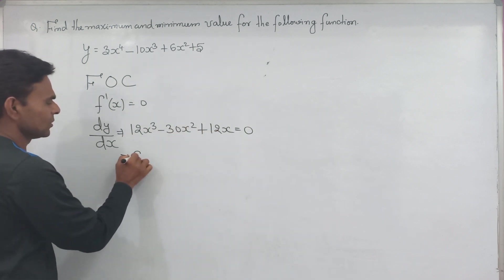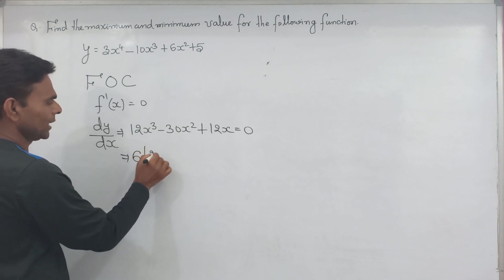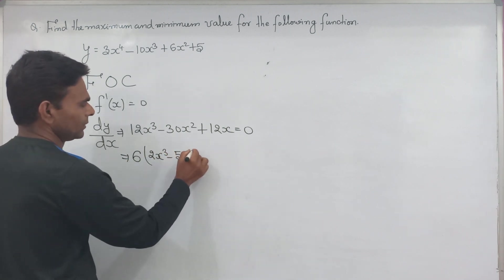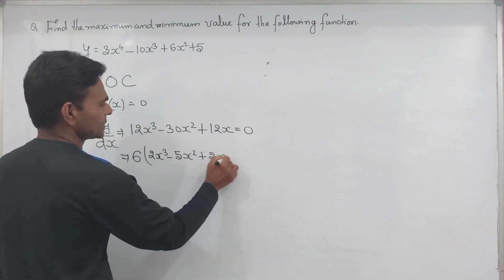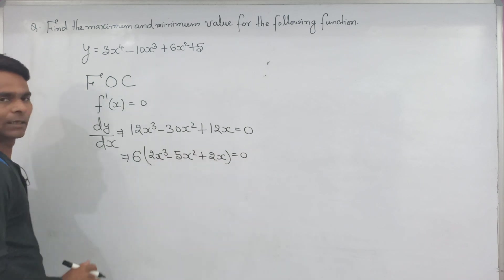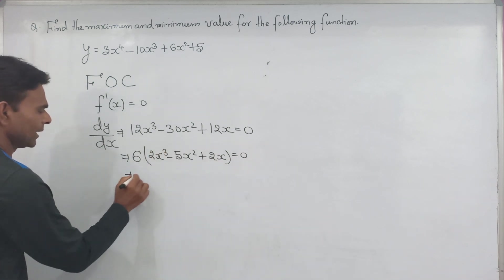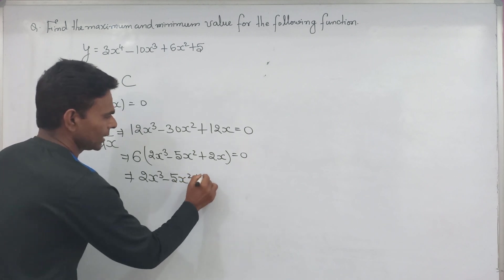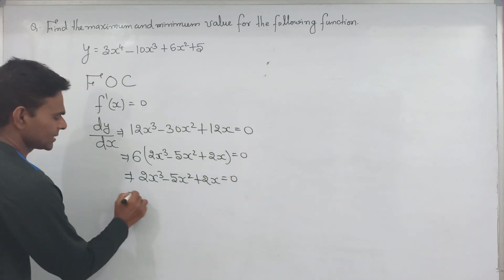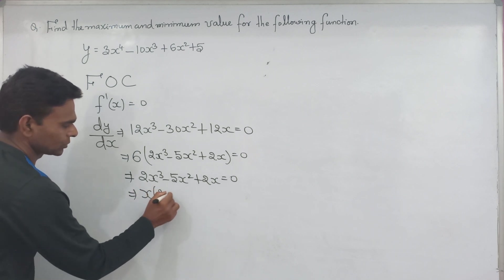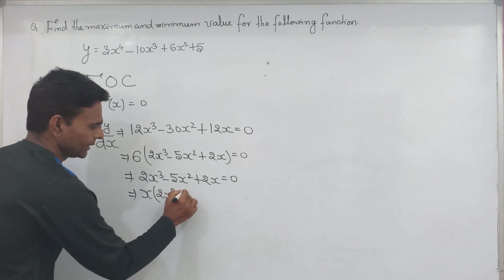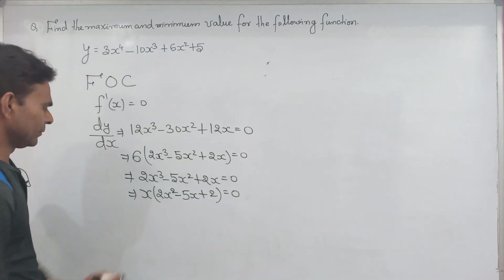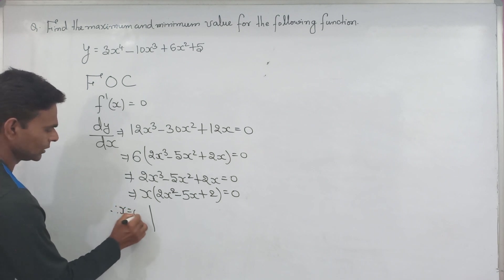We take 6 as common from the numbers. So we get 2x to the power 3 minus 5x square plus 2x equal to 0. Now taking x as common, we get x times (2x square minus 5x plus 2) equal to 0. Therefore x equal to 0 is one value.